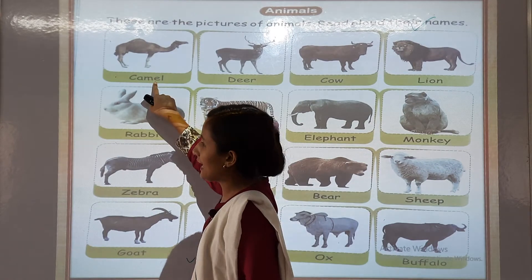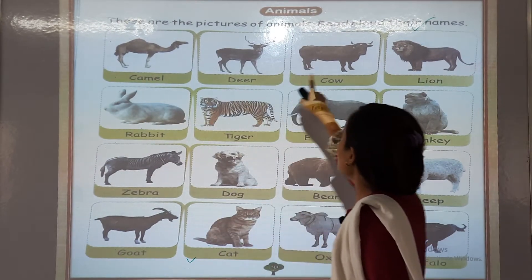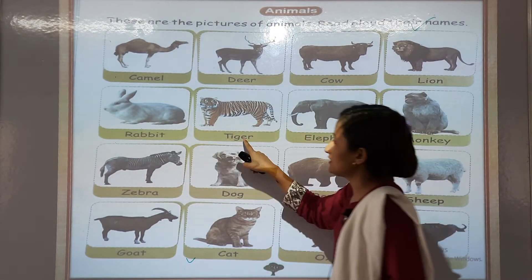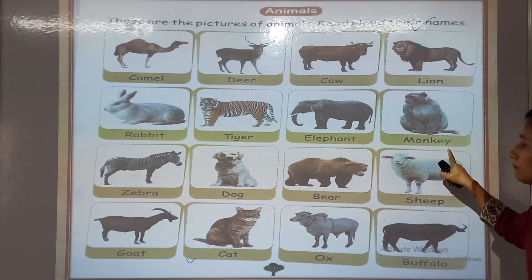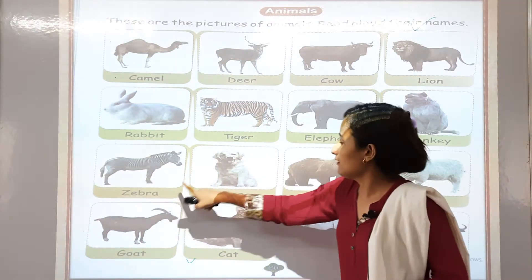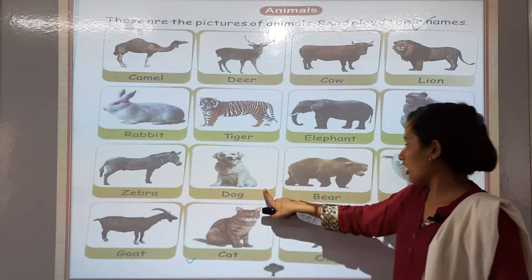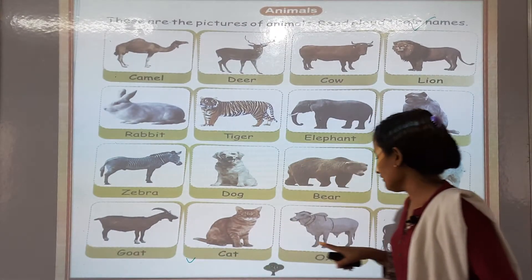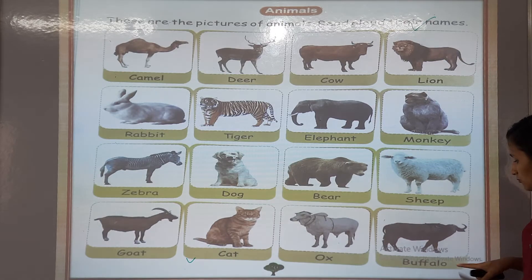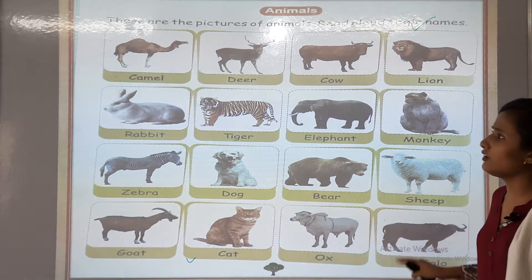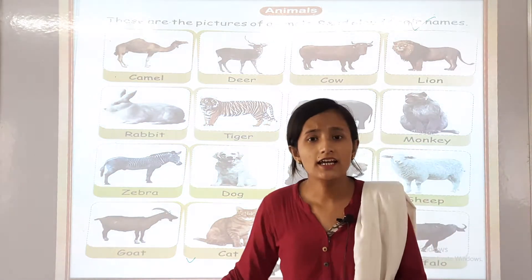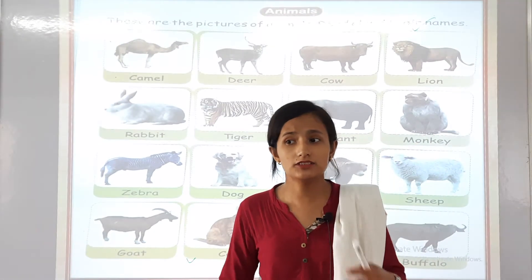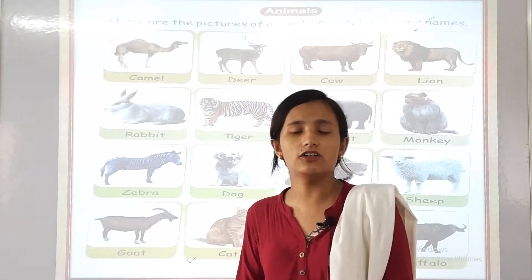For example: camel, deer, cow, lion, rabbit, tiger, elephant, monkey, zebra, dog, bear, goat, ox, and buffalo. They all have names. Animals have their own names. Persons have their own names. Things have their own names.